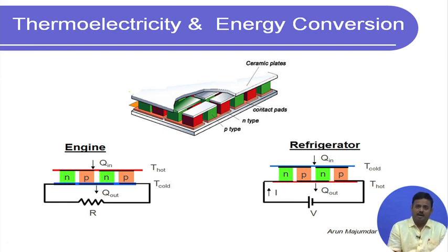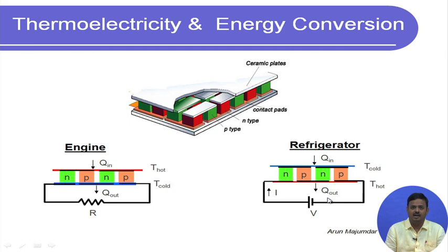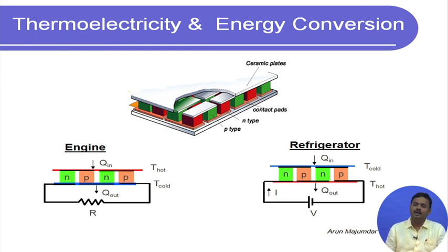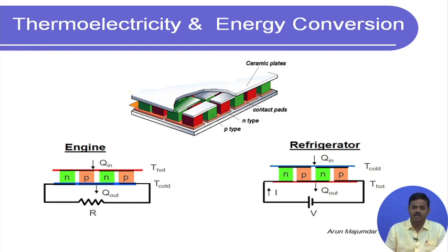The reverse is also possible. If we force a current to flow through a thermoelectric module, it gives rise to a temperature gradient across the junctions, making it possible to remove heat across an adverse temperature gradient — that is, to transfer heat from a lower temperature to a higher temperature. We see this in a refrigerator, where heat is removed from inside the refrigeration chamber at a lower temperature and rejected to the outside ambient at a higher temperature. Thermoelectrics can perform the same function.